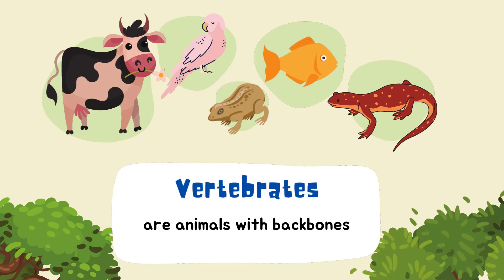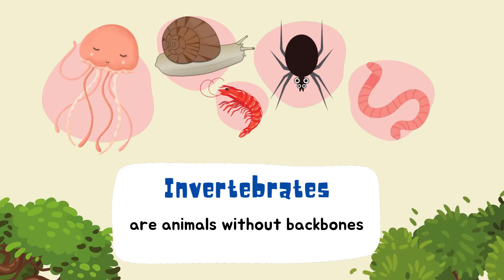Cows, parrot, frog, fish, and gecko are some examples of vertebrates. While invertebrates are animals without backbones. Jellyfish, snail, shrimp, spider, and earthworm are some of the examples of invertebrates.